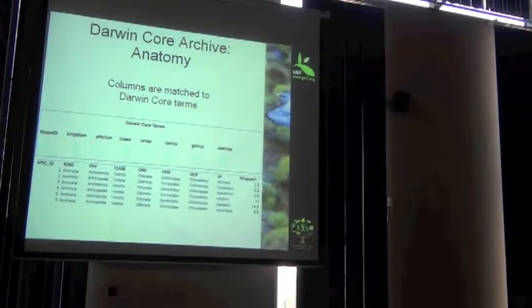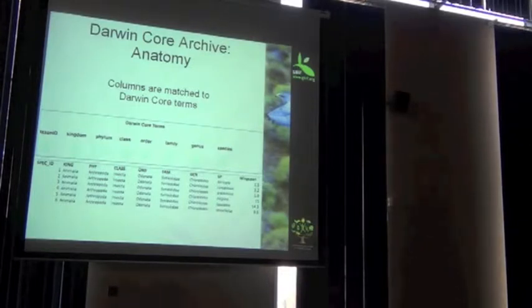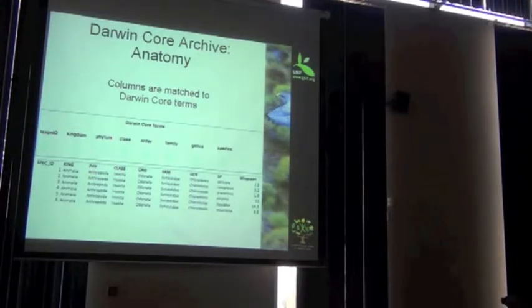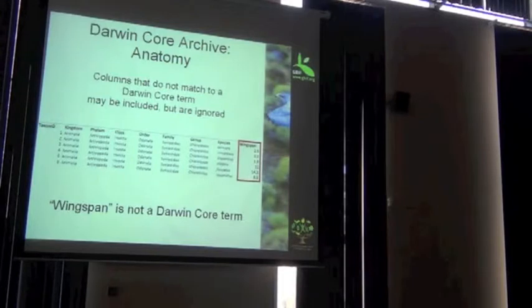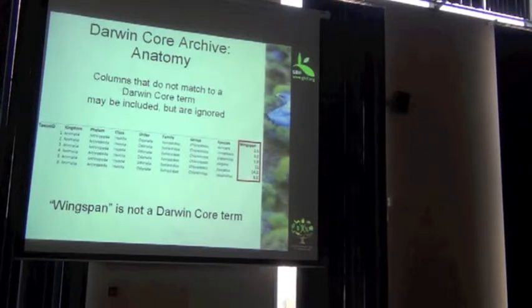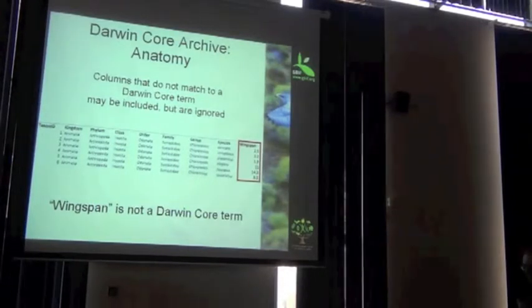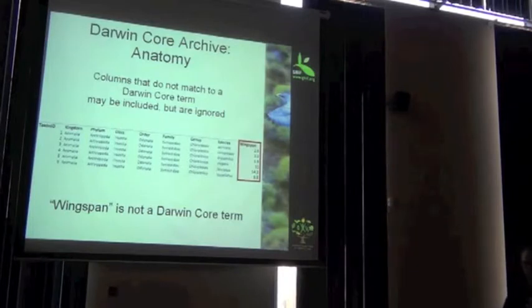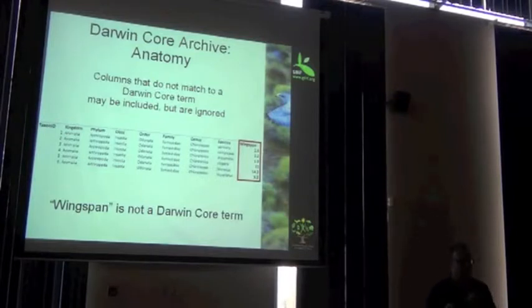Here is a collection of Darwin Core terms. Now, in order to publish a Darwin Core Archive, you need to tell people what the relationship is between the Darwin Core terms and the terms that you used in your own CSV. For terms that don't match Darwin Core, such as wingspan—correct me if I'm wrong John, but I don't think there's anything in Darwin Core terms for wingspan.